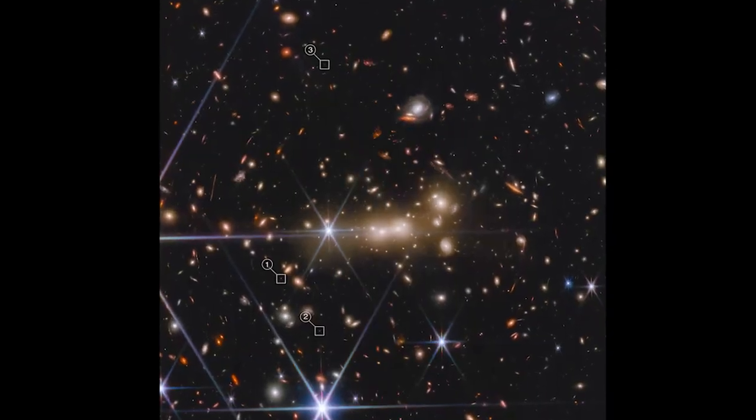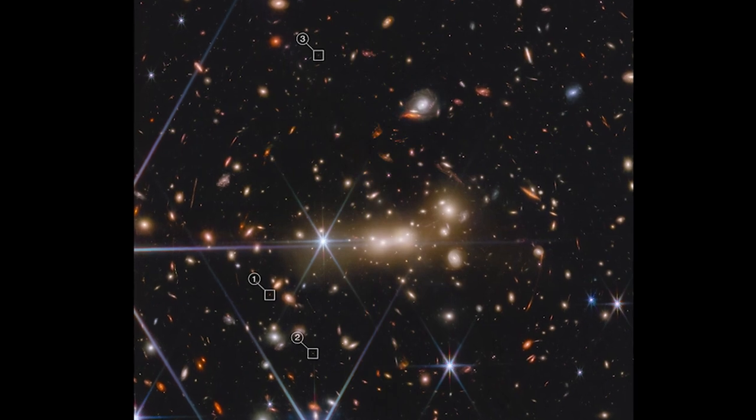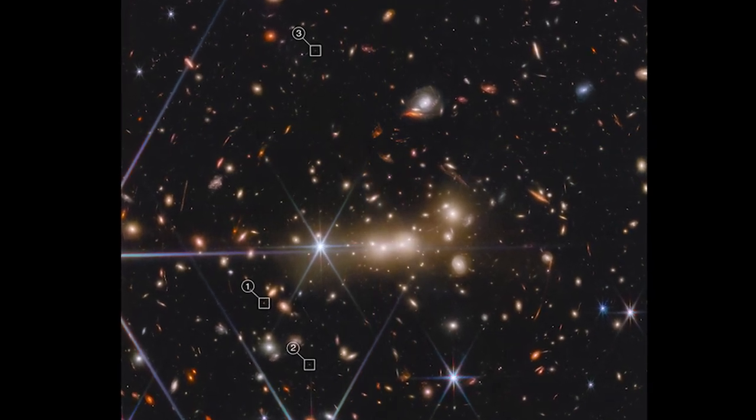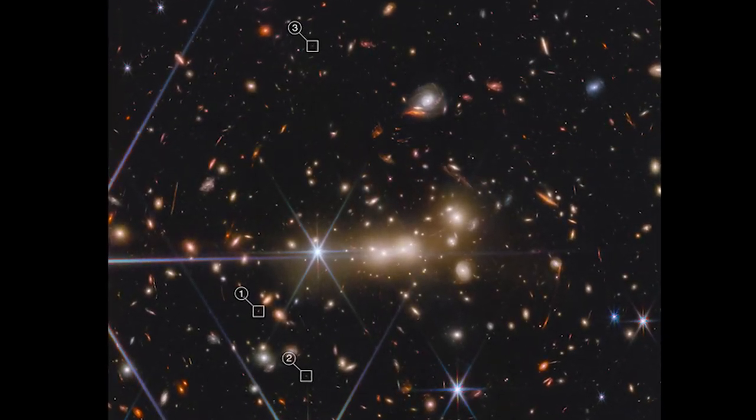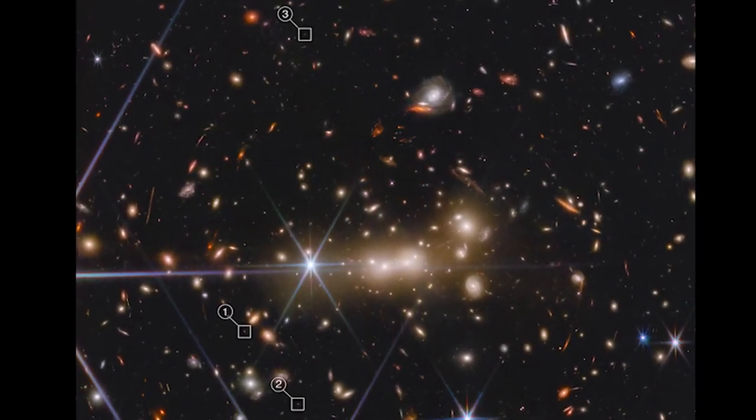The massive gravity of the galaxy cluster, Max 0647, acts as a cosmic lens to magnify and bend light from a faraway J.D. system. It also caused it to triply lens the J.D. system, making the galaxy appear in three separate locations.